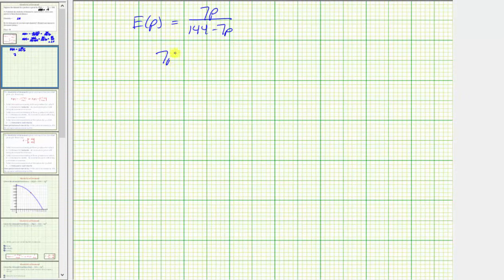e of p equals 7p divided by the quantity 144 minus 7p. And we set this equal to 1 and solve for p to determine the price at which we have unit elasticity. We could write 1 as a fraction with the denominator of 1 and then cross multiply. But let's clear the fraction from the left side of the equation by multiplying both sides of the equation by the denominator of 144 minus 7p.